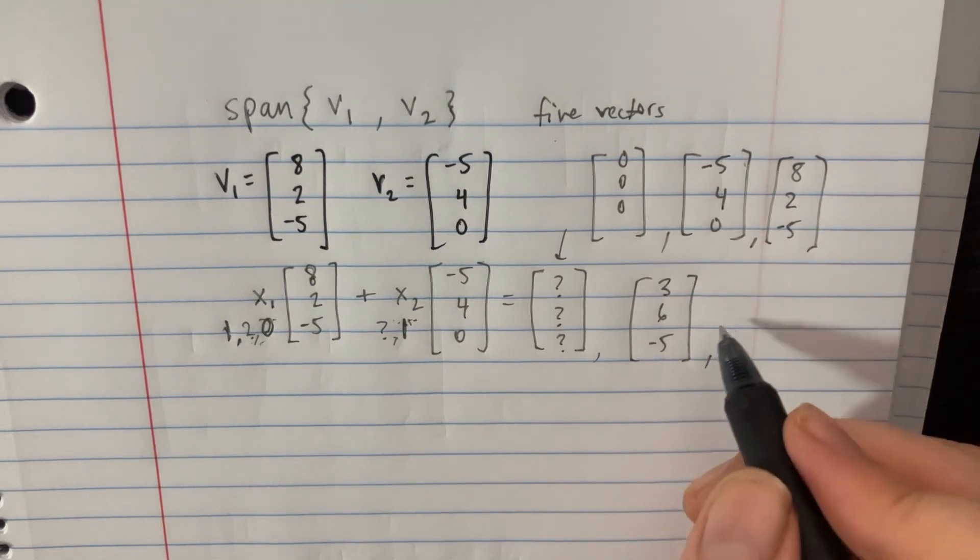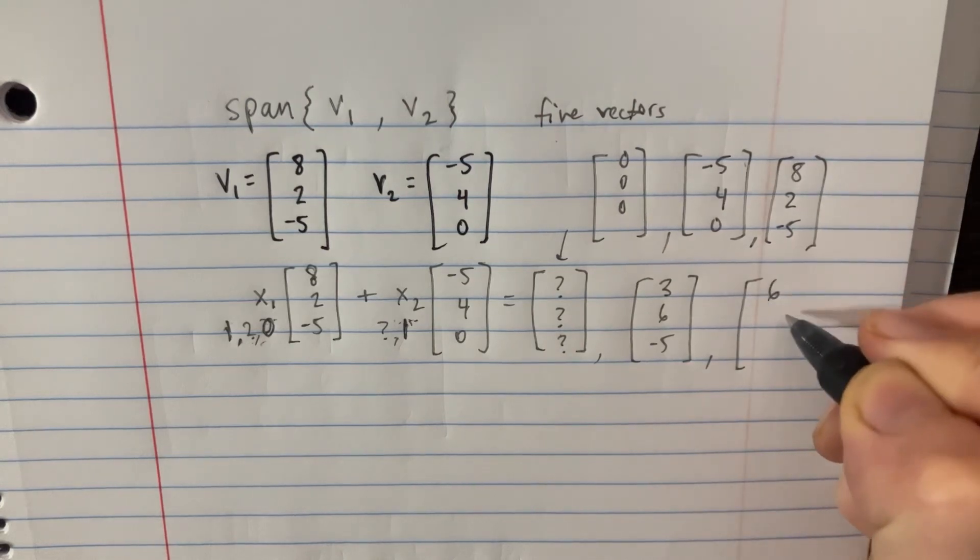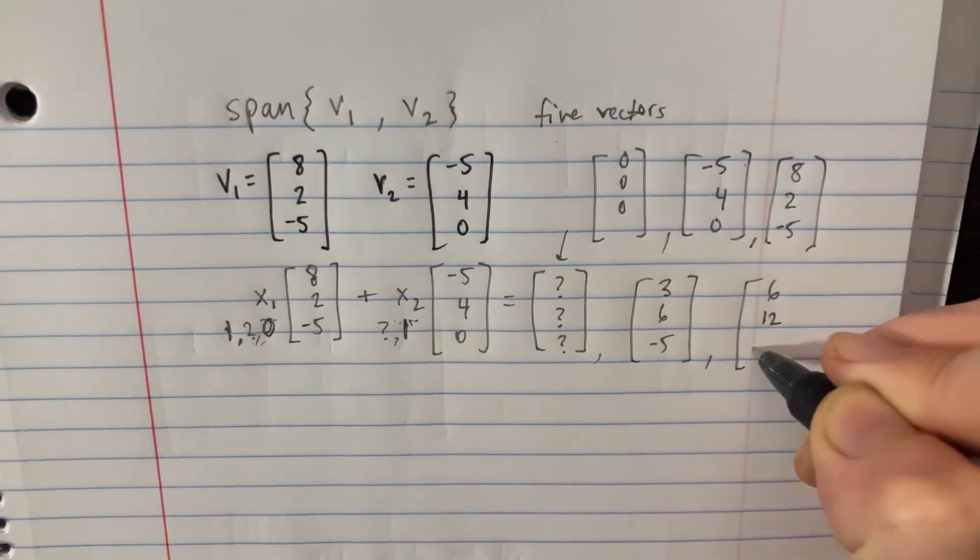And then maybe one last one. You could take any one of these answers and just multiply it by 2. One of the answers could be 6, 12, and then negative 10.